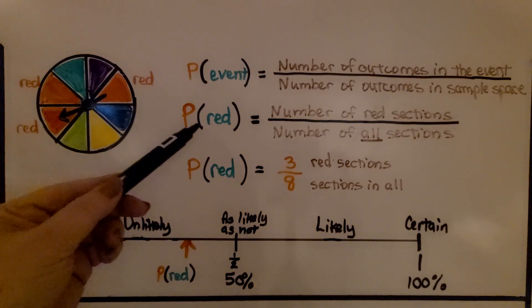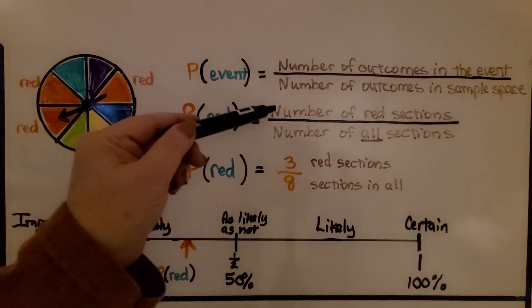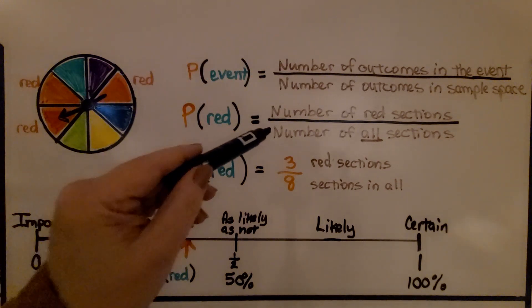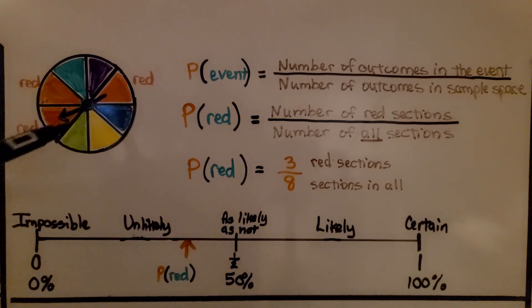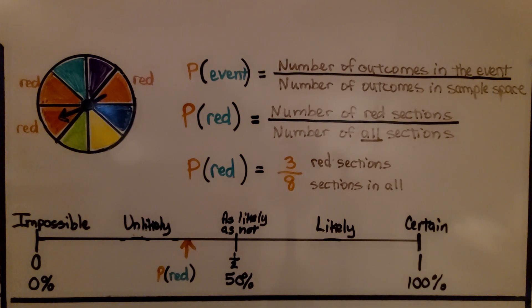So for the probability of spinning and getting red would be the number of red sections. That's the number of outcomes in the event, the outcome would be red, and the number of all the sections. That would be the number of outcomes in the sample space. So the sample space would be all of the sections. We have three red, there's eight sections.